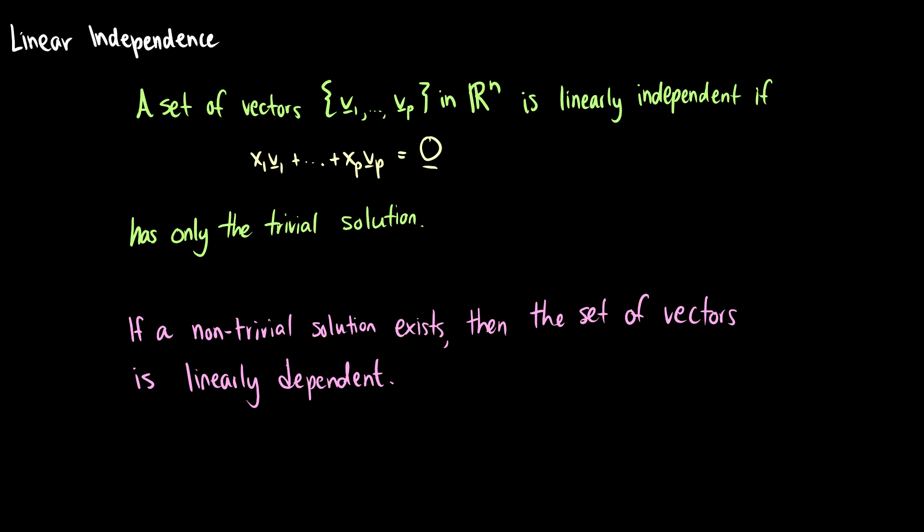In this video we're going to talk about linear independence. We say that a set of vectors is linearly independent if x1*v1 plus all the way up to xp*vp equals zero has only the trivial solution. This means the homogeneous system has only the trivial solution, and if a non-trivial solution exists, then the set of vectors is linearly dependent — meaning if there's a free variable, the vectors are linearly dependent.